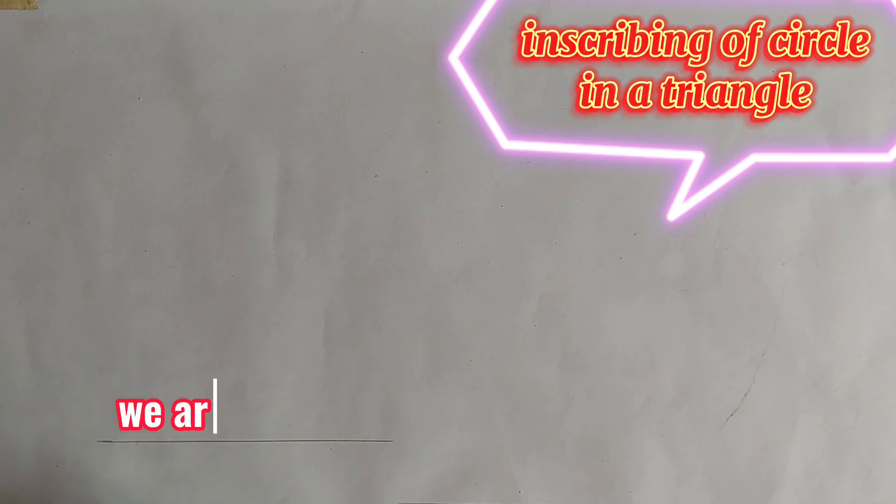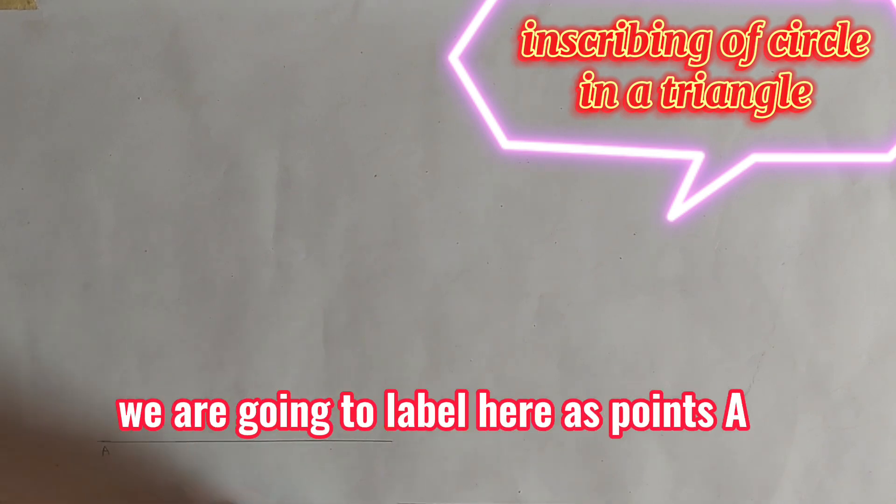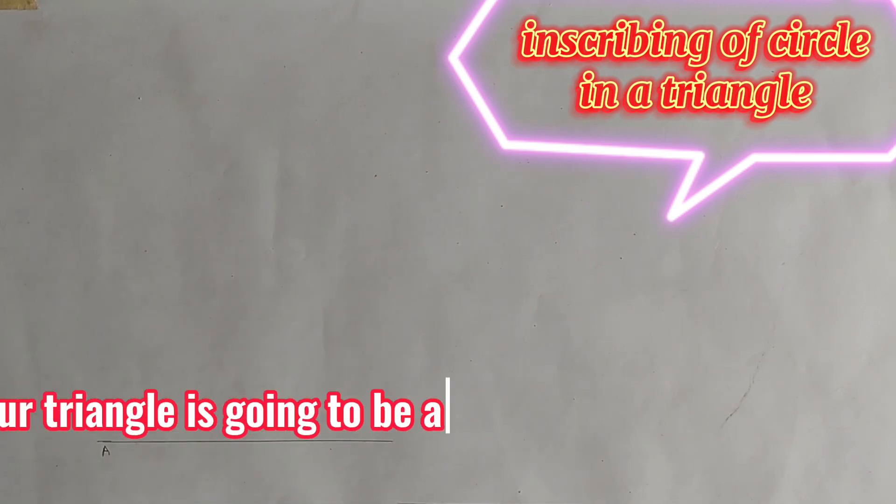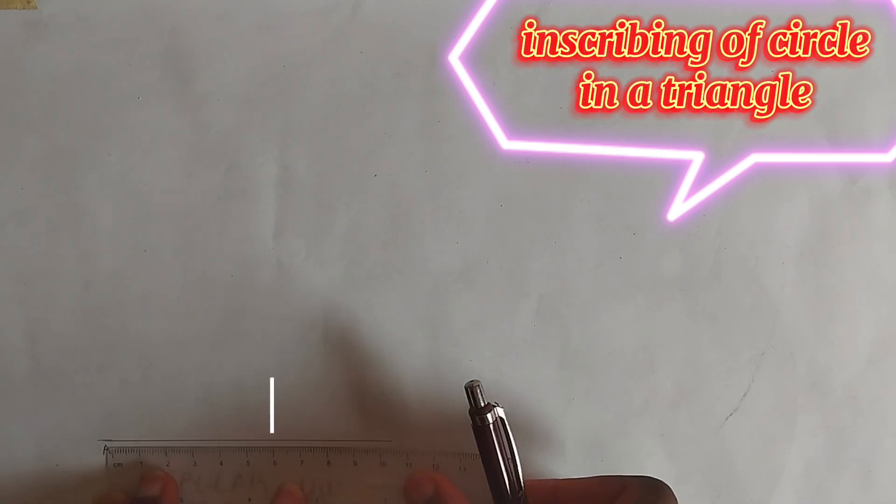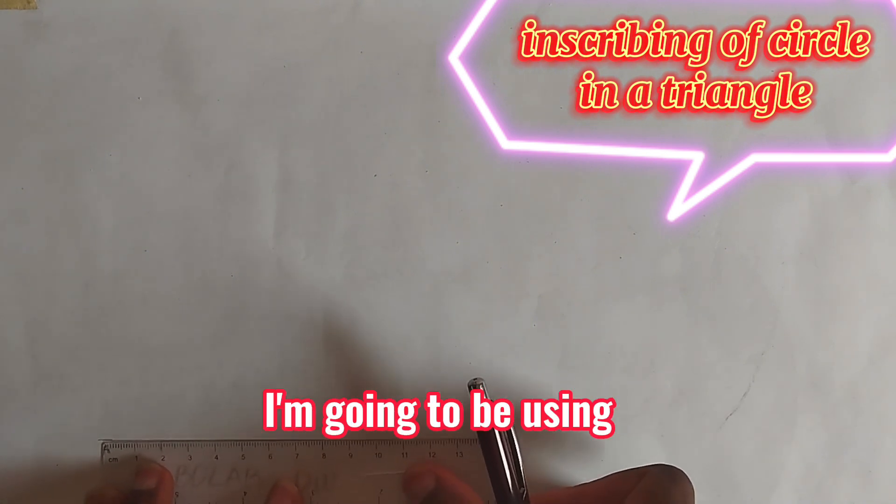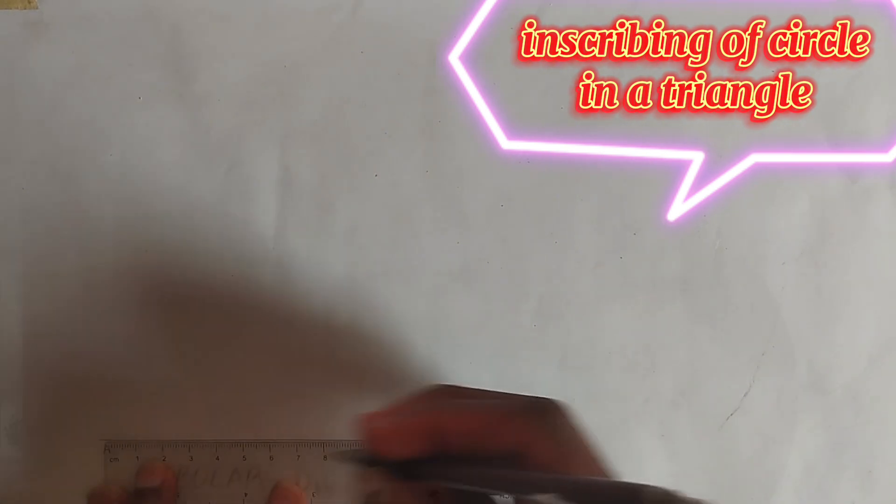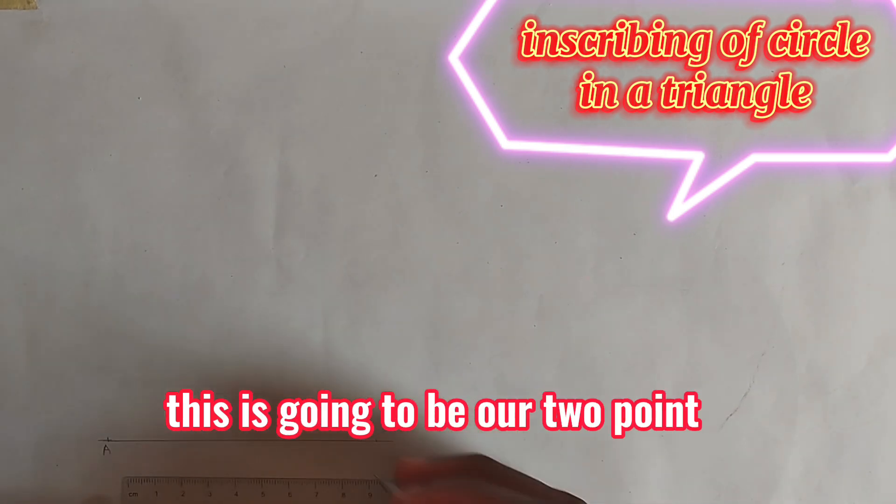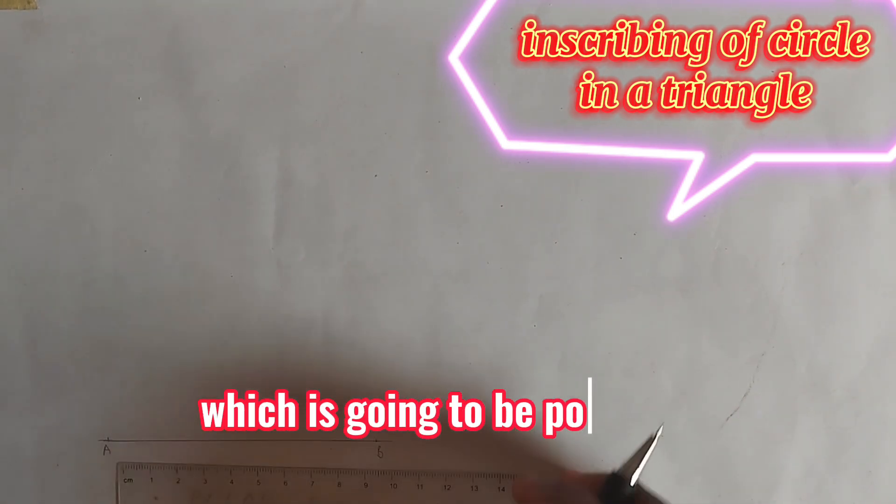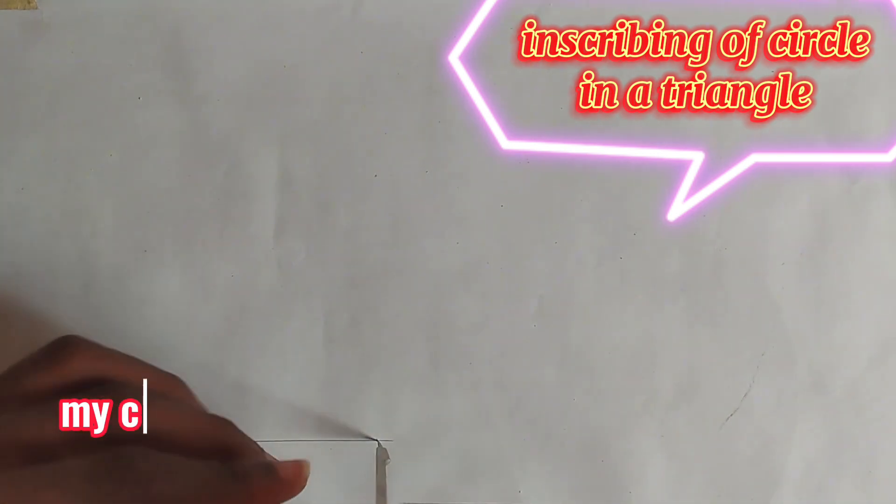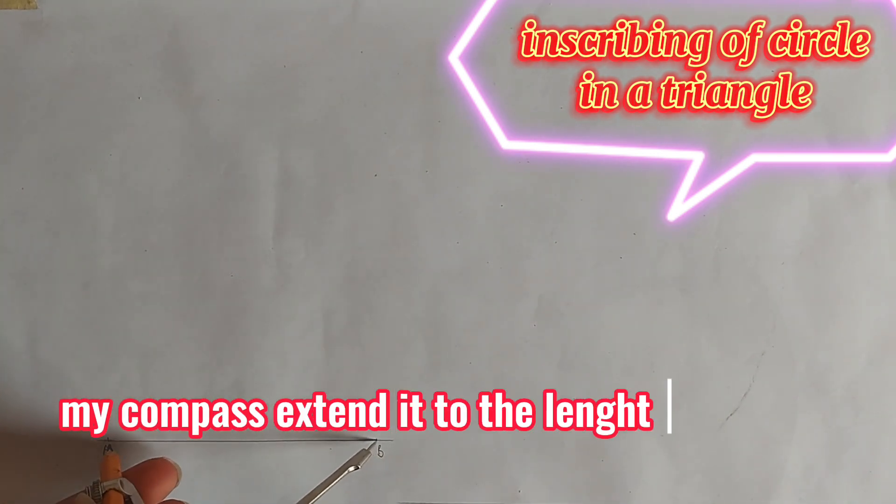We draw our straight line and label here as point A. Our triangle is going to be an equilateral triangle, so I'm going to be using 10 centimeters. This place is going to be point B.